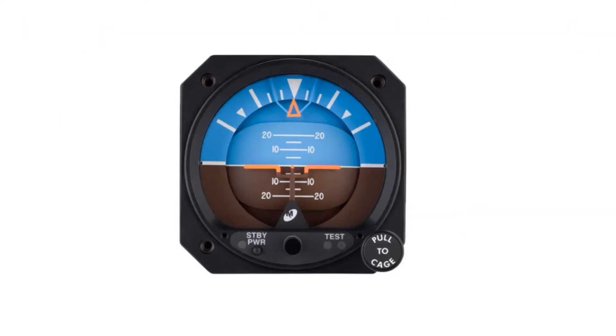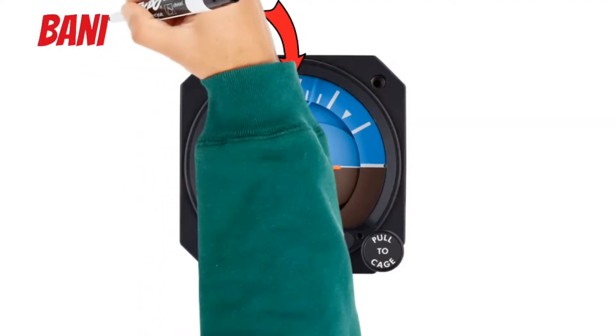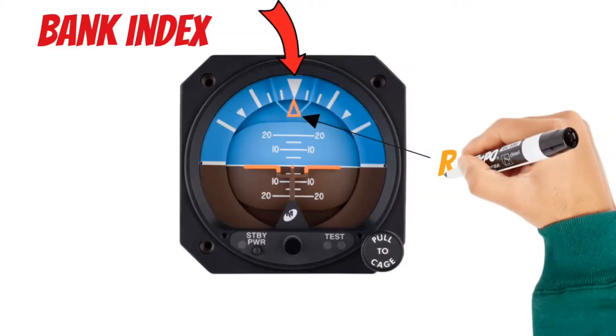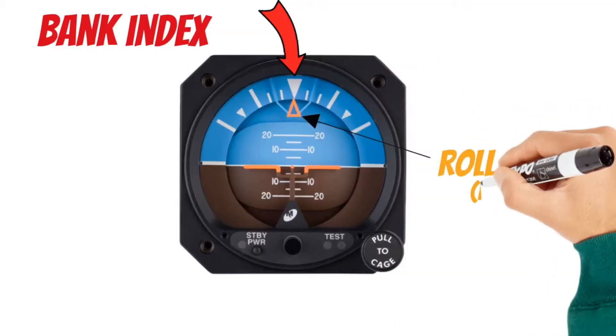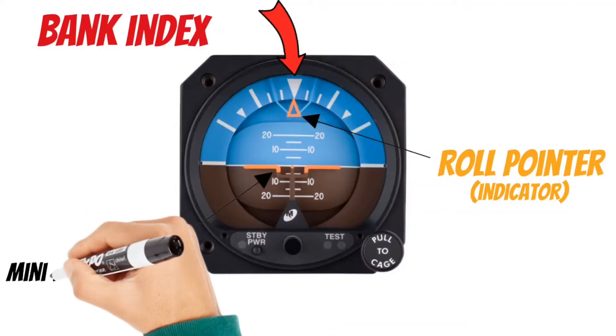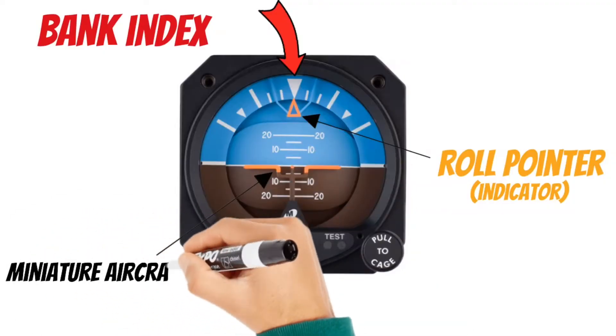Now there are a lot of different kinds of Attitude Indicators out there, but all of them have some kind of bank index so you can tell what the bank angle of your aircraft is. When your aircraft is in a bank or a roll, the roll pointer or roll indicator points to the exact bank angle that your aircraft is at. In addition to that, this miniature aircraft shows you the bank angle of your wings in relation to the horizon.